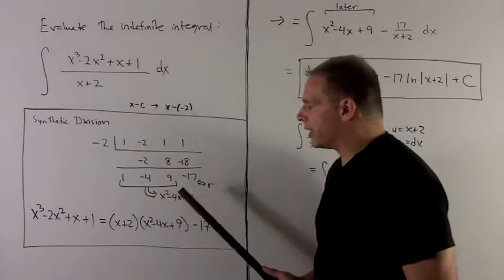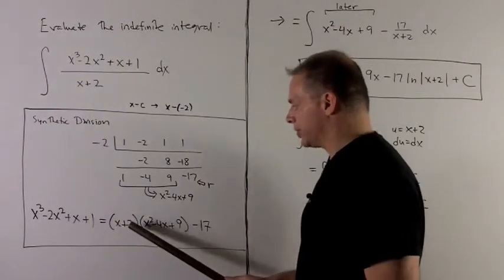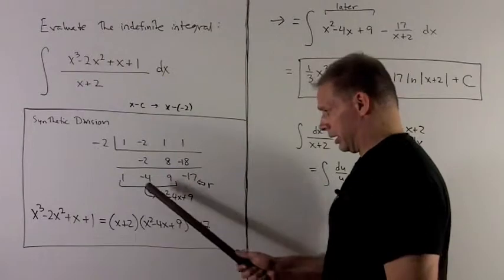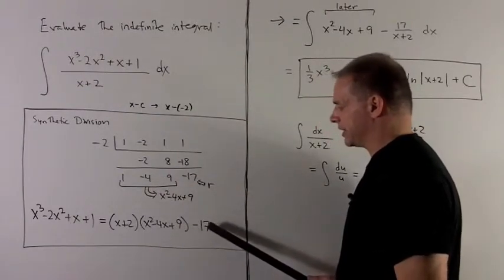The way I interpret all this is my original polynomial equals x plus 2 times the polynomial that comes out of a synthetic division, plus the remainder, which is minus 17.